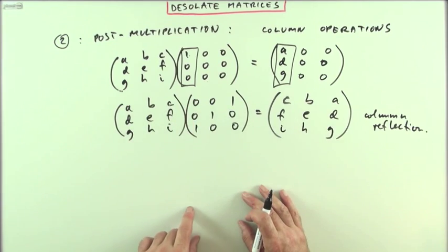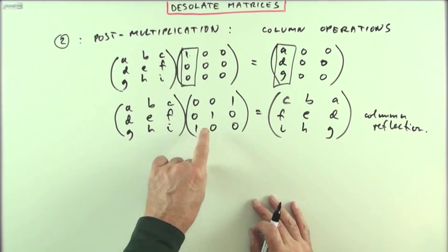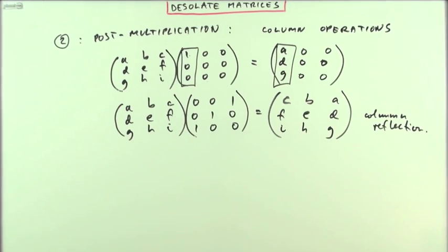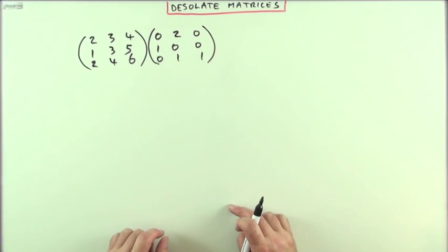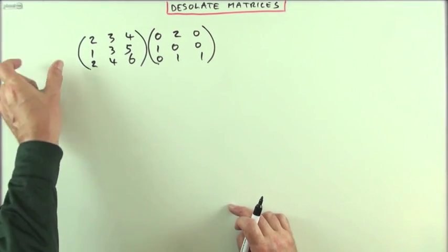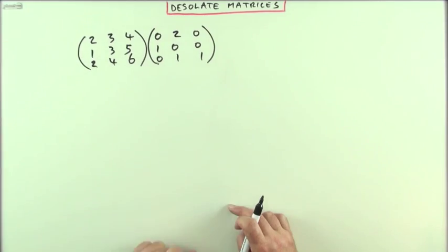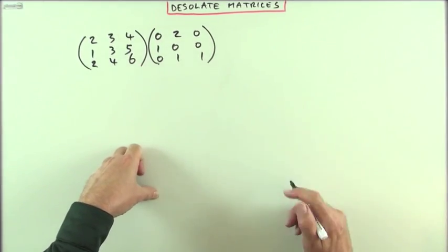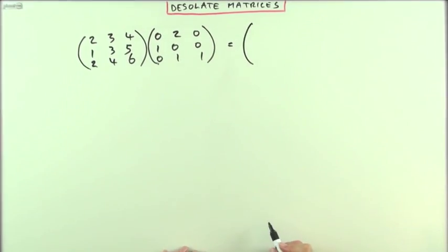You can just consider what each of the columns is going to put into the columns in the answer. So to summarize: pre-multiplication uses row operations; post-multiplication uses column operations. Using the same matrices as the first case, I should be able to rattle these answers off quite quickly.